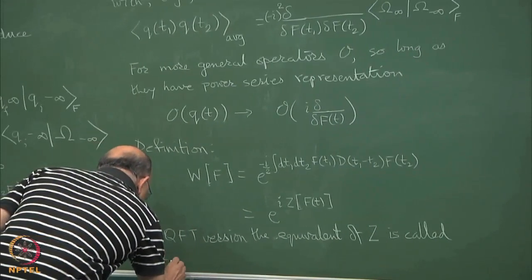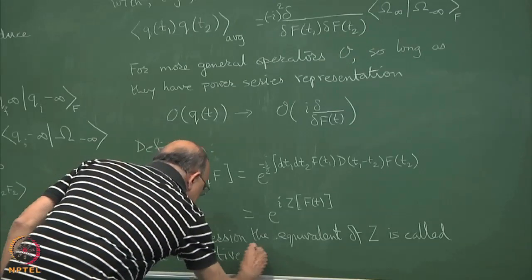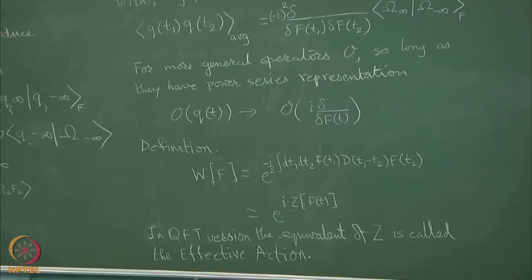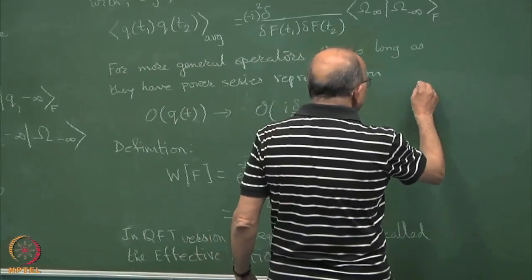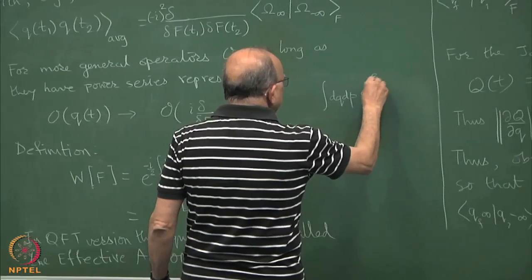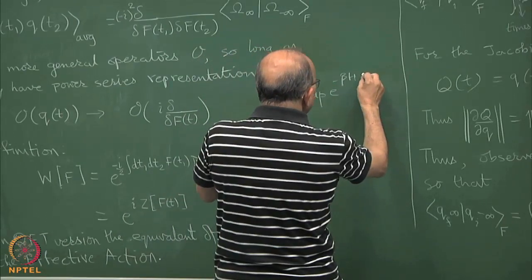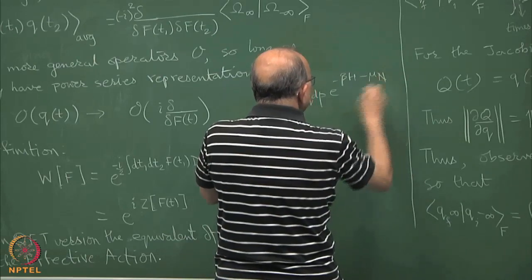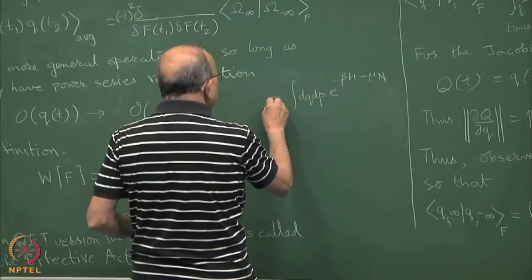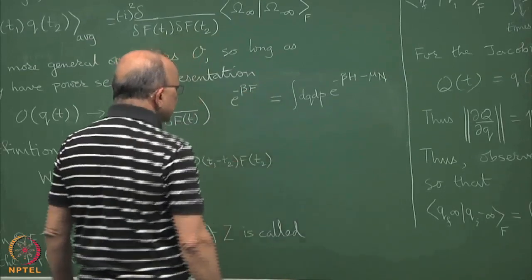Actually, you have seen this in statistical mechanics. If you have the phase space thing dq dp e raised to minus beta H times some operator, you put minus mu n. Then after you do the integral, you get the potential, the thermodynamic potential appears in the exponent, e to the minus beta times some free energy.